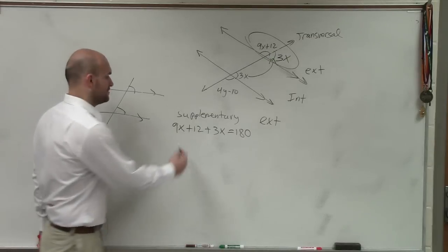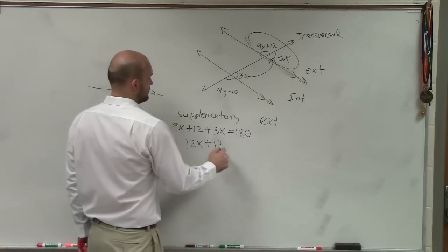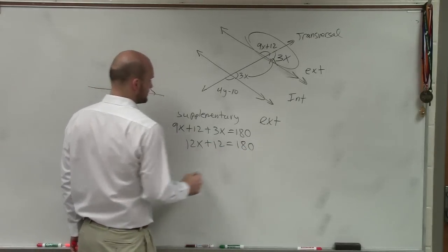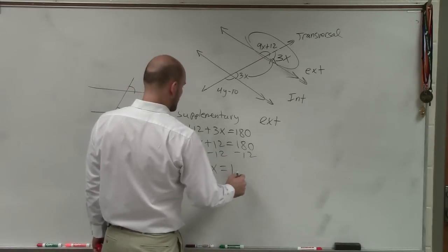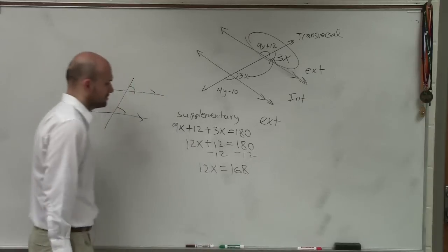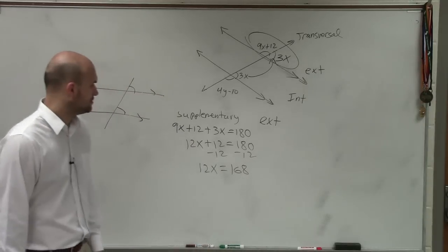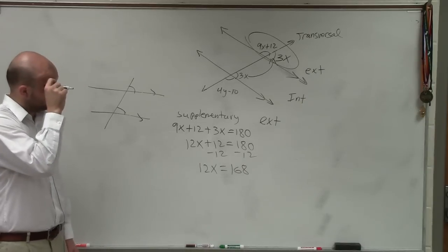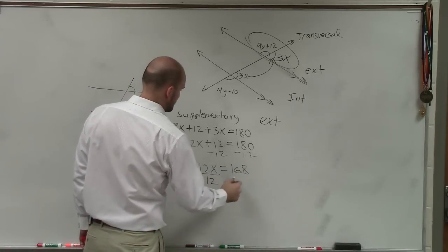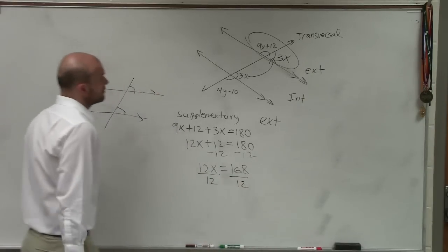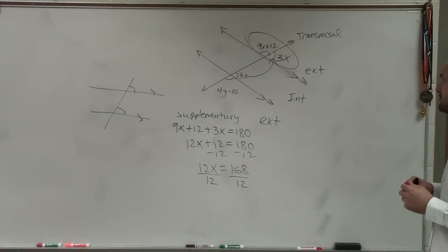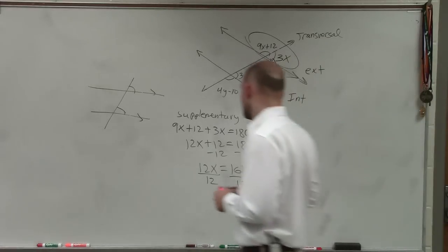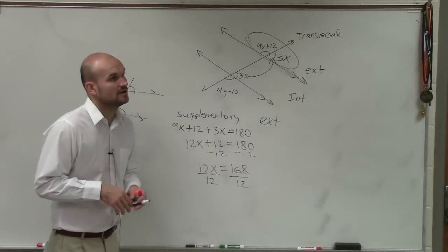So now you've got to solve. 9x plus 3x is 12x, plus 12 equals 180. Subtract 12: 12x equals 168. Divide by 12. Let's check: 144, 156, 168 — so x equals 14.